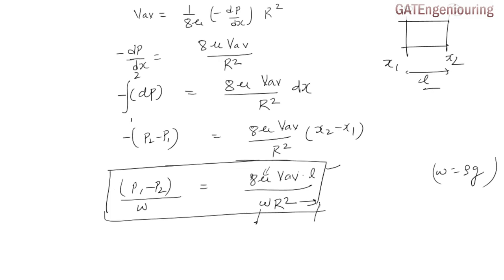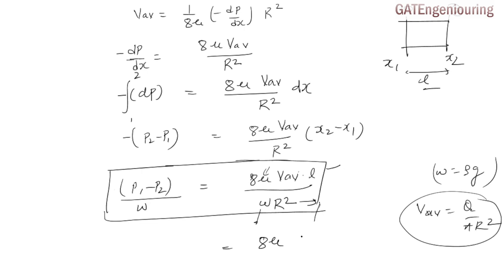I hope you liked this video. Please keep sharing it with your friends and make use of these formulas to solve numerical problems. For example, find the pressure drop across a pipe given its length, radius, and average velocity — or if average velocity is not directly given, it can be found from the volume flow rate Q using v_avg = Q/(πR²), giving h_f = 8μQL / (w·π·R⁴).